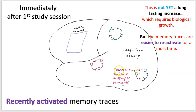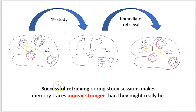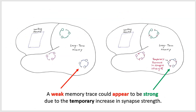This is temporary — it's not yet a long-lasting increase, which requires biological growth — but the memory traces are easier to reactivate for a short time. Successful retrieving during study sessions makes memory traces appear stronger than they might really be. During a study session we have memory traces with a temporary increase in synapse strength, making them easier to reactivate. We might think we know the information because we can retrieve it easily right after reading, but that easy retrieval may be due to this temporary strengthening. A weak memory trace could appear strong because of this temporary increase.